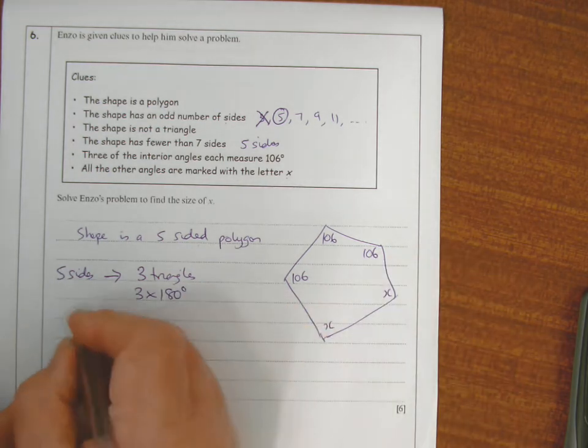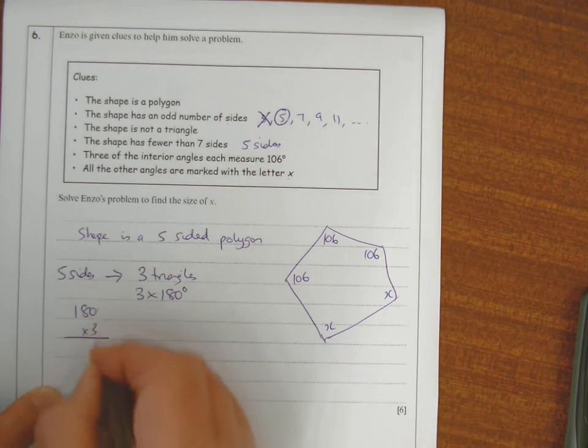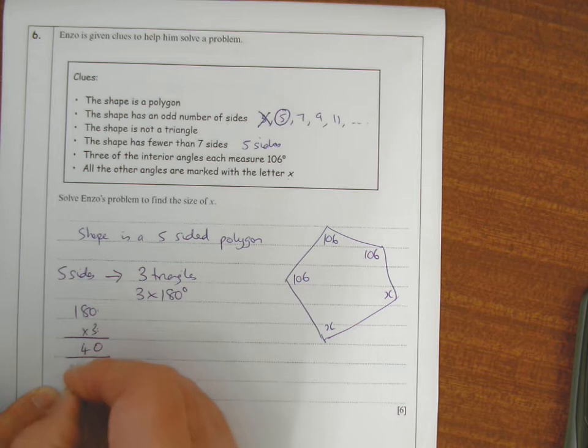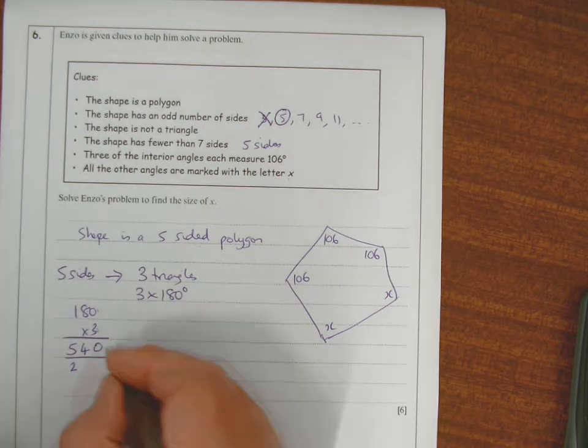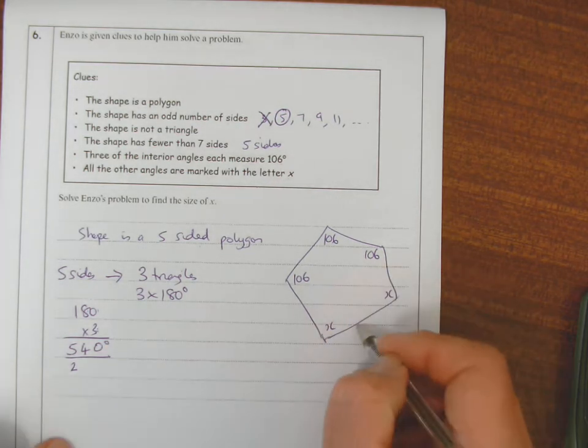So three lots of 180, 180 times 3. Nothing times 3 is nothing, 8 threes are 24 carry 2, 1 three is 3 plus 2 is 5. That's 540 degrees total.